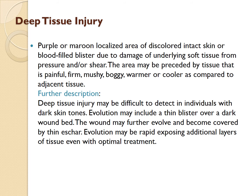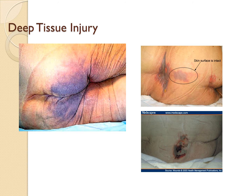Deep tissue injury: essentially, due to pressure or other damage, the wound is actually not open — there's injury to the deep muscle. We need to keep a close eye on this wound because many times it's going to wind up being full thickness. It often looks like a rug burn or an area where someone was laying on it for a long period of time, and this often happens at the end of life. The surface of the skin might be intact, but just looking at the skin you can see there's a lot of damage underneath. Once the muscle has suffered ischemia or lack of oxygen, it's very difficult for that muscle to come back.